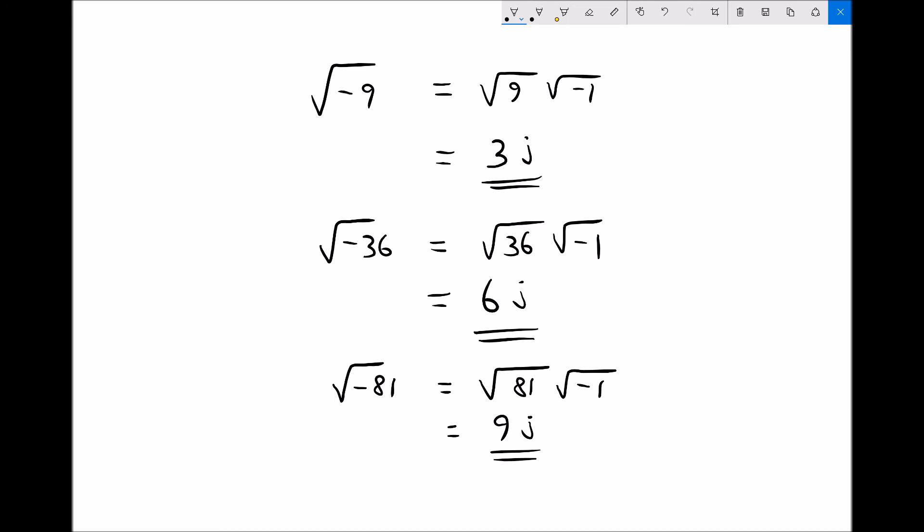The way that we eliminate a j is by squaring it. If we ever see the term j squared, well j squared is root minus 1 all squared. Well squaring a square root is just going to leave us with j squared equals minus 1. So we do have a means of getting rid of imaginary numbers by squaring them.